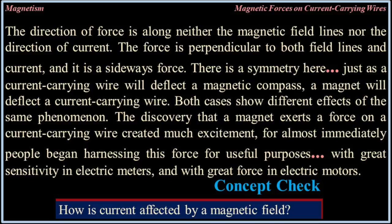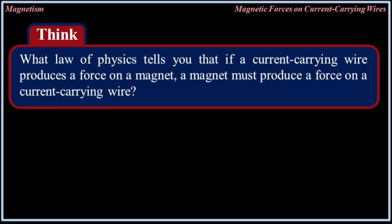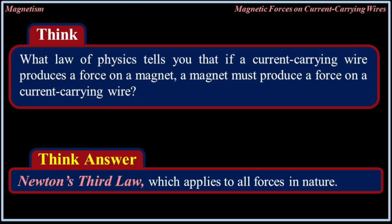There is a symmetry here: just as a current-carrying wire will deflect a magnetic compass, a magnet will deflect a current-carrying wire. The discovery that a magnet exerts a force on a current-carrying wire created much excitement, for almost immediately people began harnessing this force for useful purposes with great sensitivity in electric meters and with great force in electric motors. Newton's third law, which applies to all forces in nature, tells us that if a current-carrying wire produces a force on a magnet, a magnet must produce a force on a current-carrying wire.